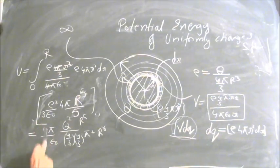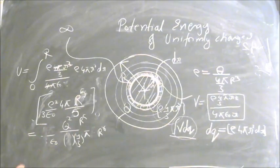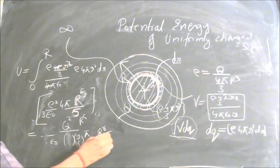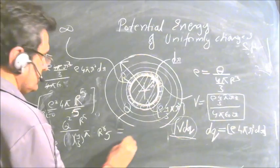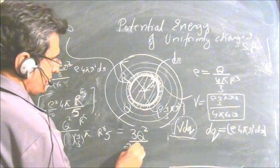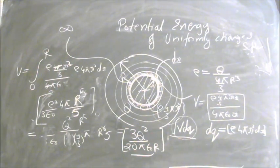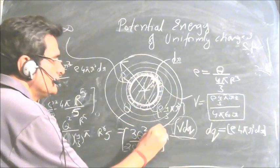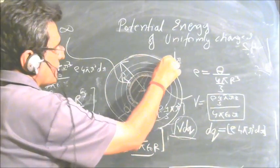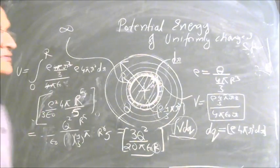The (4/3) factors cancel, π cancels leaving one π, and the factor of 5 from the integral gives a denominator of 20. The final result is: potential energy U = 3Q² / (20πε₀R). This is the work we have to do to bring charge from infinity and assemble it so that the total radius is R, with Q uniformly spread throughout the sphere. In subsequent lectures we will deal with the shell.